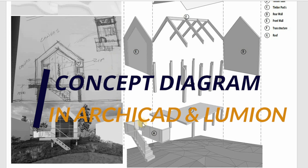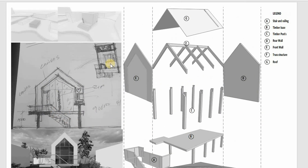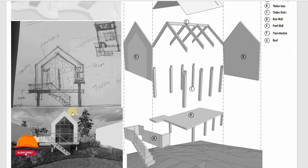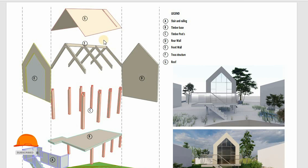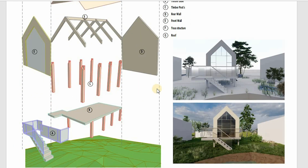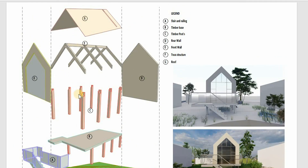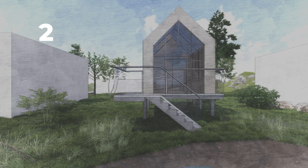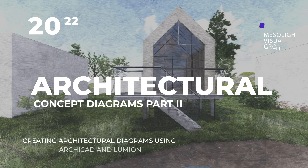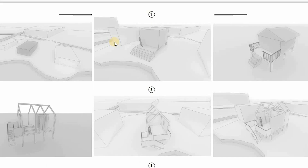Architectural concept diagrams are the key themes and ideas underpinning every studio project in the design phase. They enable you to articulate your own thoughts and architectural ideas from words to drawings, and make it easier for your audience to understand them. Welcome back to our channel — in today's video we'll cover how to create architectural diagrams in ArchiCAD and Lumion, part 2.